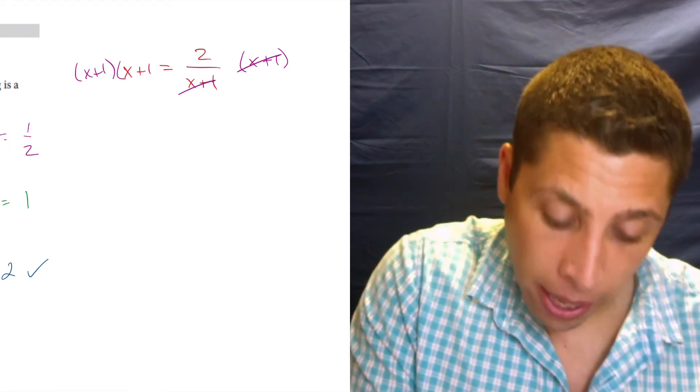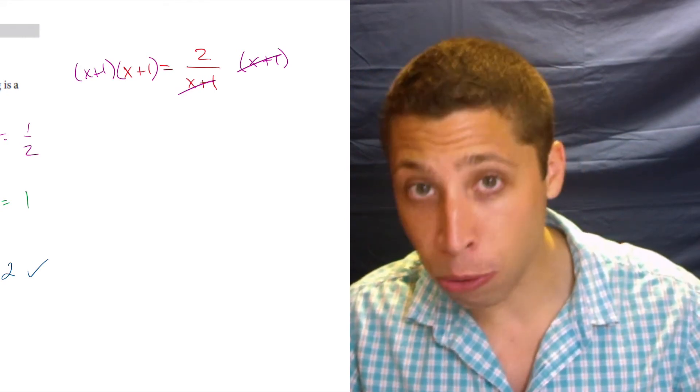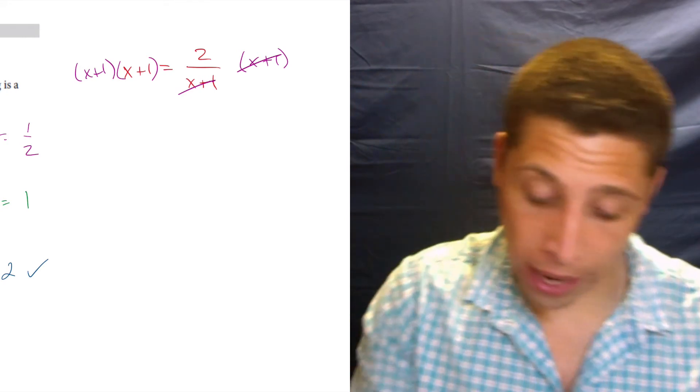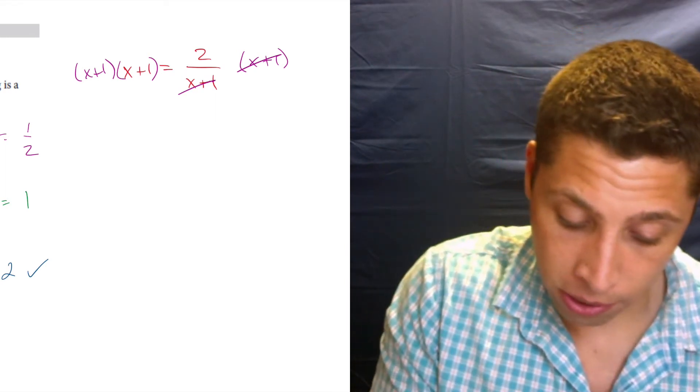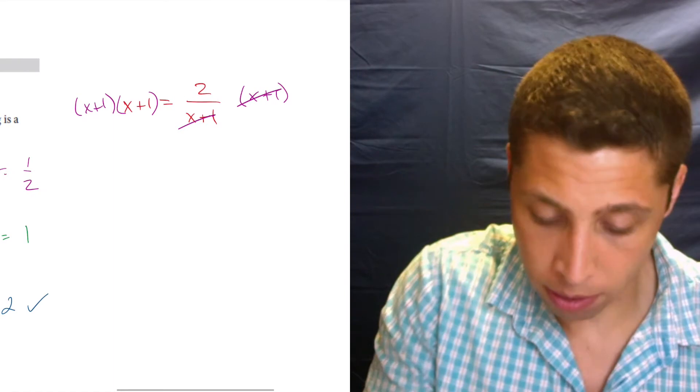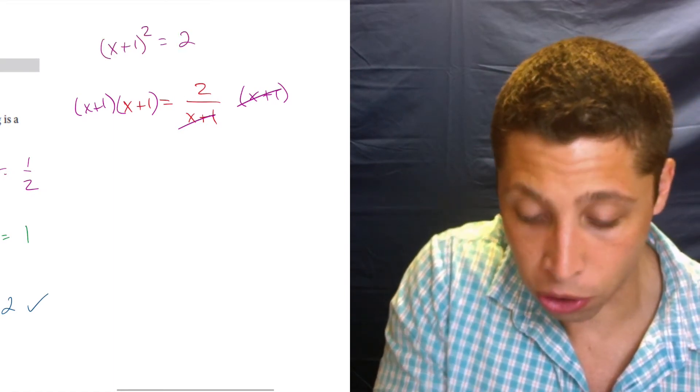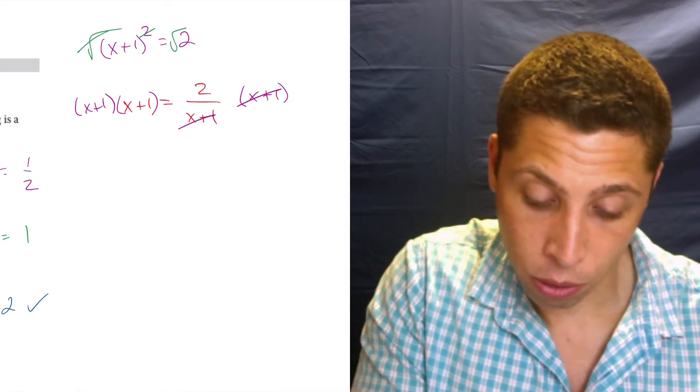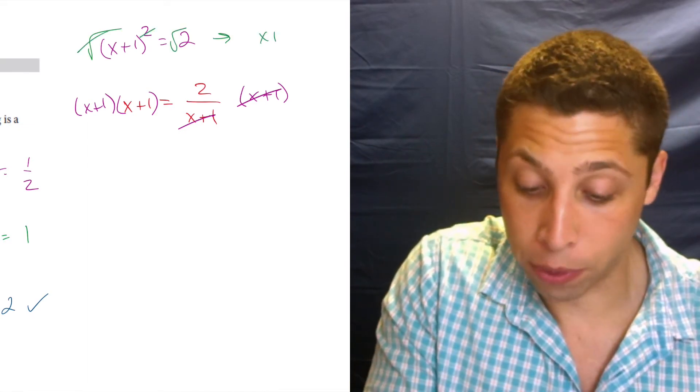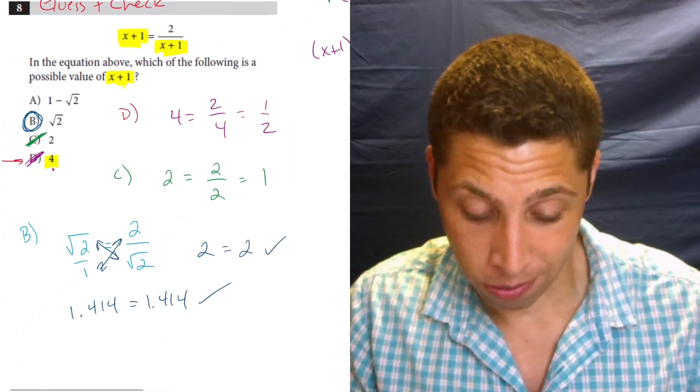But if I do that, that means I've got two X plus 1s that I need to multiply together. Most of you are going to foil that out. There's a shortcut here. And what you should do is keep it as X plus 1 squared is equal to 2. So that way you can take the square root of both sides, cross out the squared, and be left with X plus 1 equals radical 2, which is what we just got.